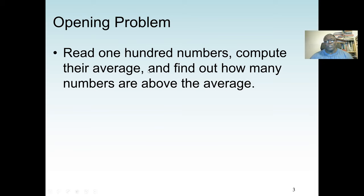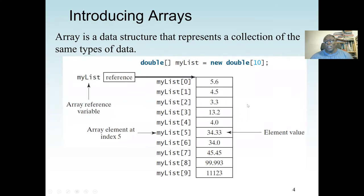Our problem is that we don't want to declare 100 variables to compute the average of 100 values. We want to declare one variable that can store up to 100 values — which means we use an array. An array is a data structure. The concept of data structure is how data is organized and manipulated. An array is a collection of the same types of data; the key point is same data type.